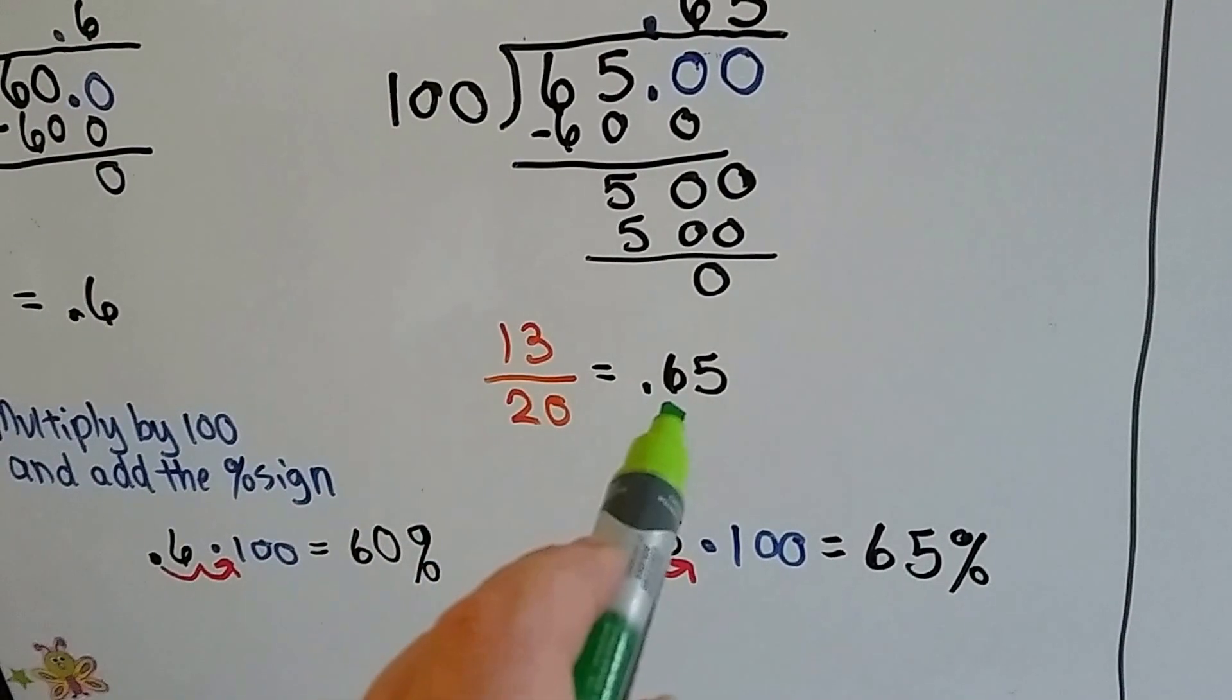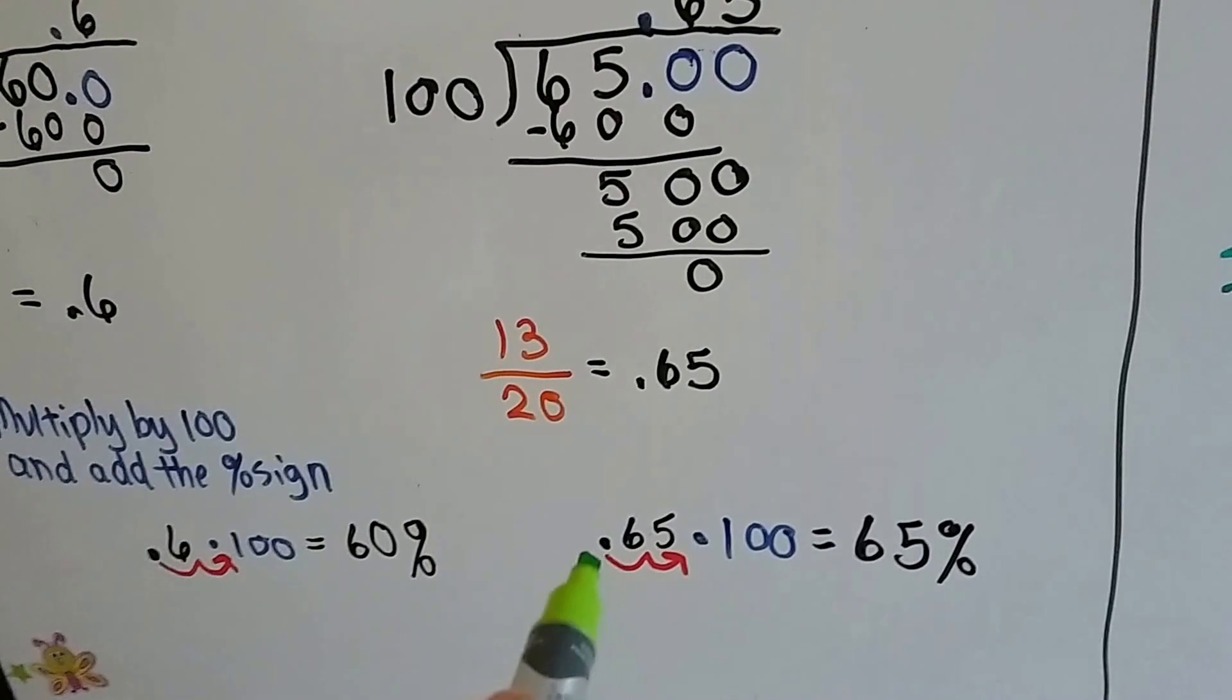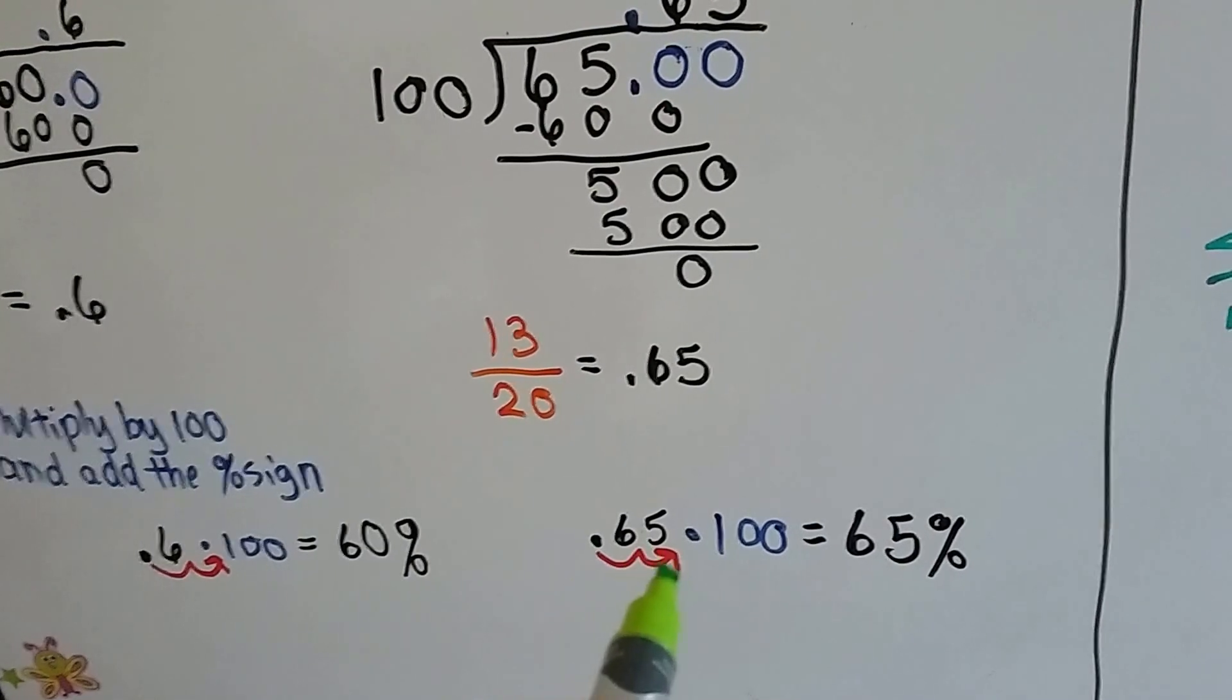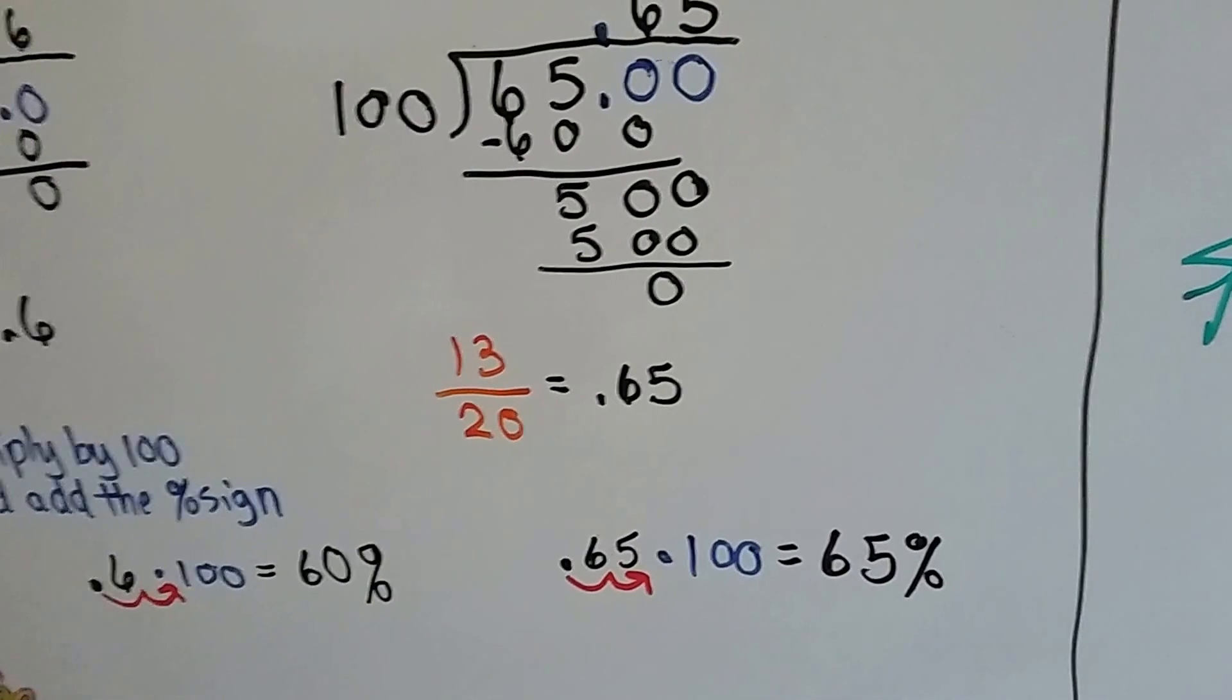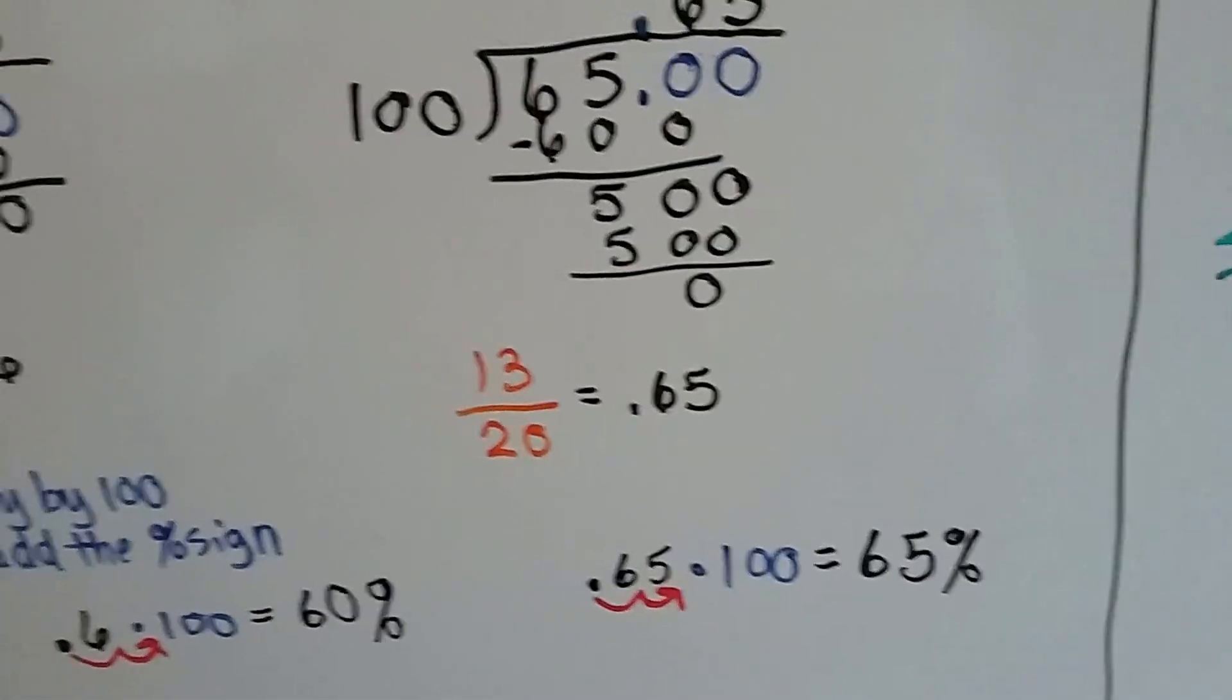The 13 twentieths is now .65. We multiply it by 100 and that moves the decimal point one, two and gets rid of it. So it's behind the five and we just add the percentage sign. We've got 65%.